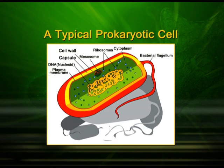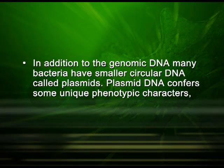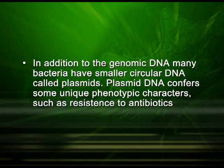Look at a typical prokaryotic cell. The prokaryotic cells have a cell wall surrounding the cell membrane. The fluid matrix filling the cell is the cytoplasm. There is no well-defined nucleus, meaning the genetic material is basically a naked DNA which is not enveloped by a nuclear membrane. In addition to the genomic DNA, many bacteria have smaller circular DNA called plasmids. The plasmid DNA confers some unique phenotypic characteristics to the bacterial cell, including resistance to antibiotics.